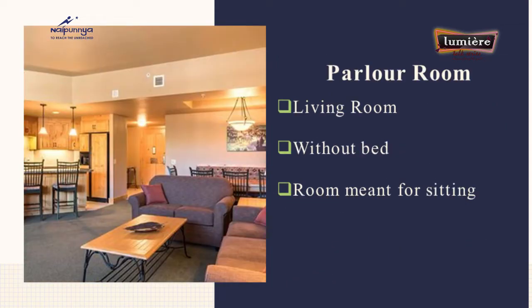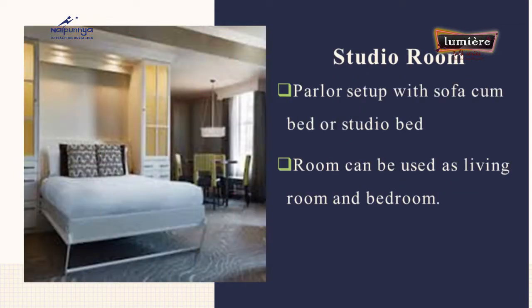The next category is parlor room, which is a living room. It is not usually used as a bedroom. It is a living room with seating arrangements only, where the guest can entertain their visitors. The next category is studio room — a room with a parlor setup, meaning a living room with a sofa-cum-bed or studio bed. This sofa-cum-bed can be used as a bed at night, and during the daytime the room can be used as a living room.